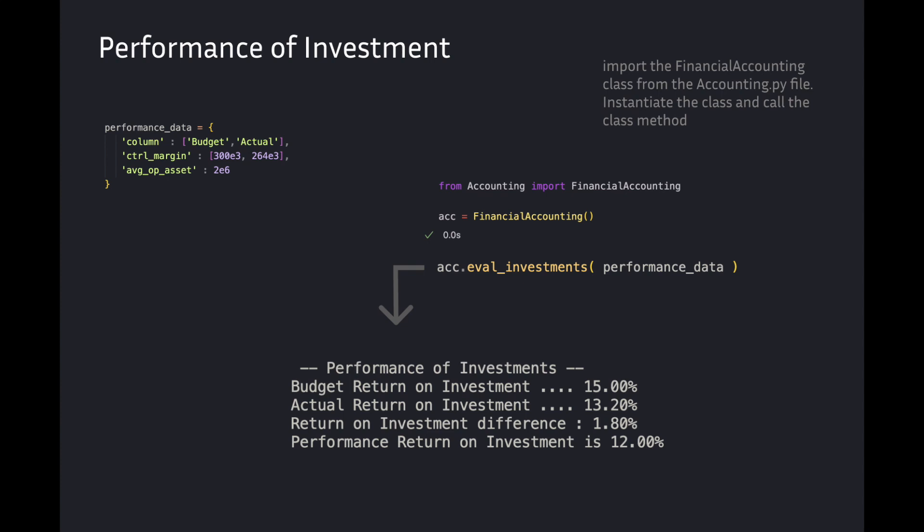This video is about performance of investment and its evaluation. Our data is the budgeted and actual investment data. We call our method and pass in the data dictionary, and we get the calculations of the performance of investments. I will show you how to make this function method now.